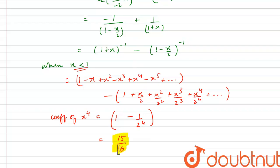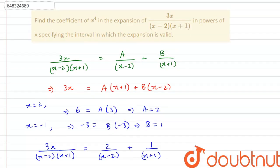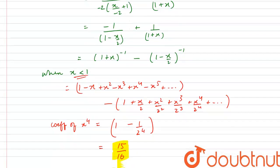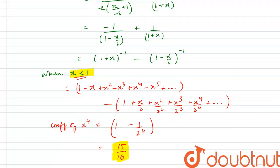So 15 over 16 is our answer. The condition for this expansion to be valid — that is, the specified interval — is that the modulus of x must be less than 1. Therefore, x must lie between minus 1 and 1. This is the interval for which the coefficient of x to the power 4 is 15 by 16.